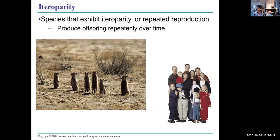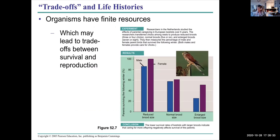Iteroparity are species that exhibit repeated reproduction, producing offspring repeatedly over time. That includes humans, of course, and meerkats.